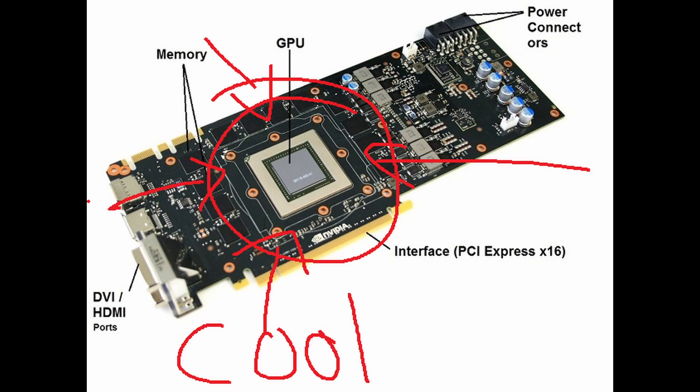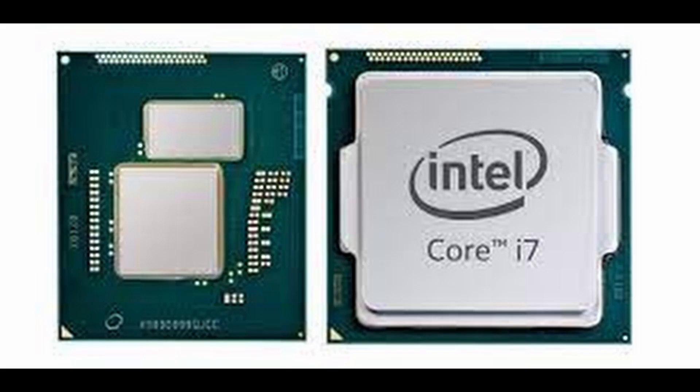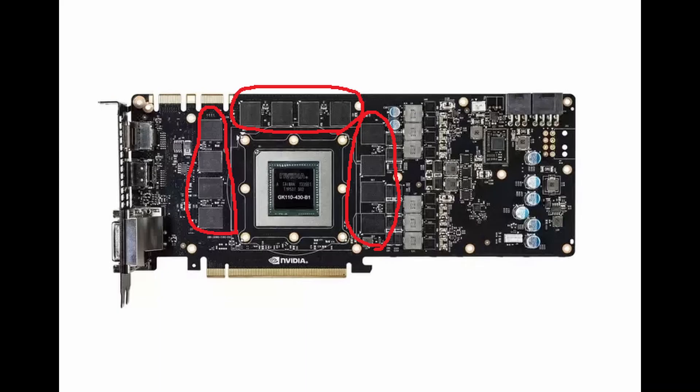The processor in the graphics card is called the GPU, and a lot of people refer to the graphics card as though it's only a GPU, but there are more components and processes involved as well. The GPU gets its instructions from the processor of the computer, and when the graphics card is done creating the image, the GPU sends it to the screen to show it.